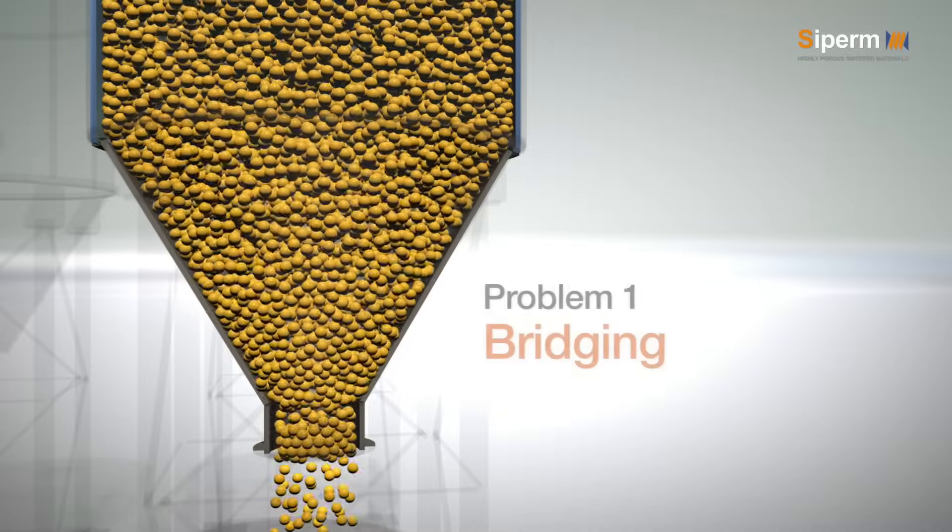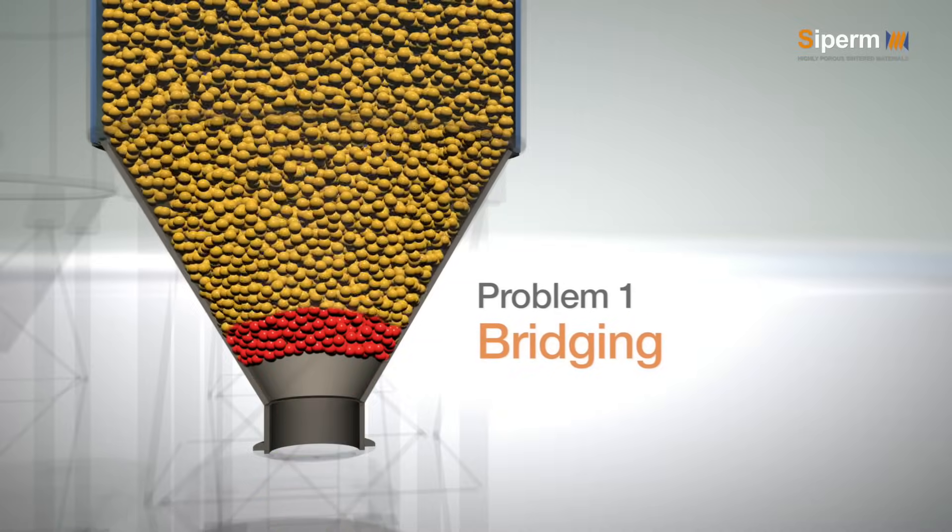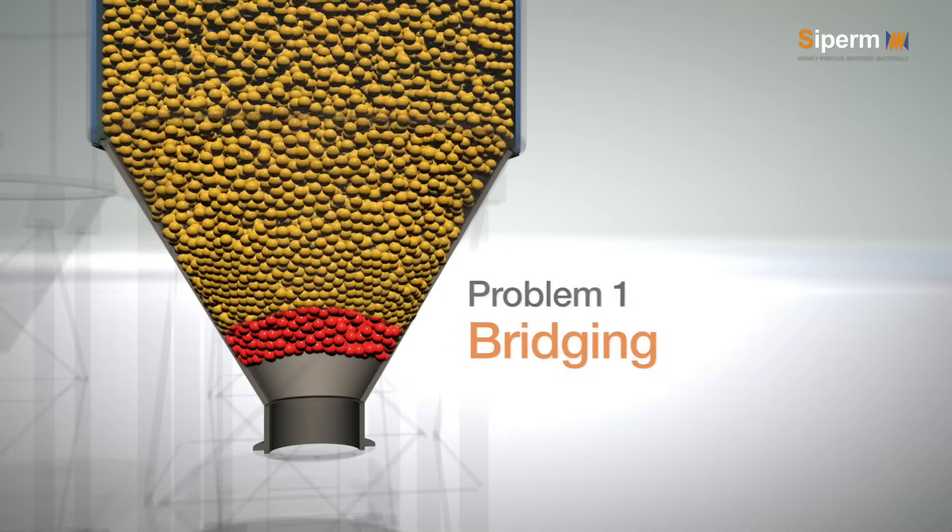The simulation shows examples of common ensuing problems such as bridging or rat-holing, which occur during the unloading of the silo.